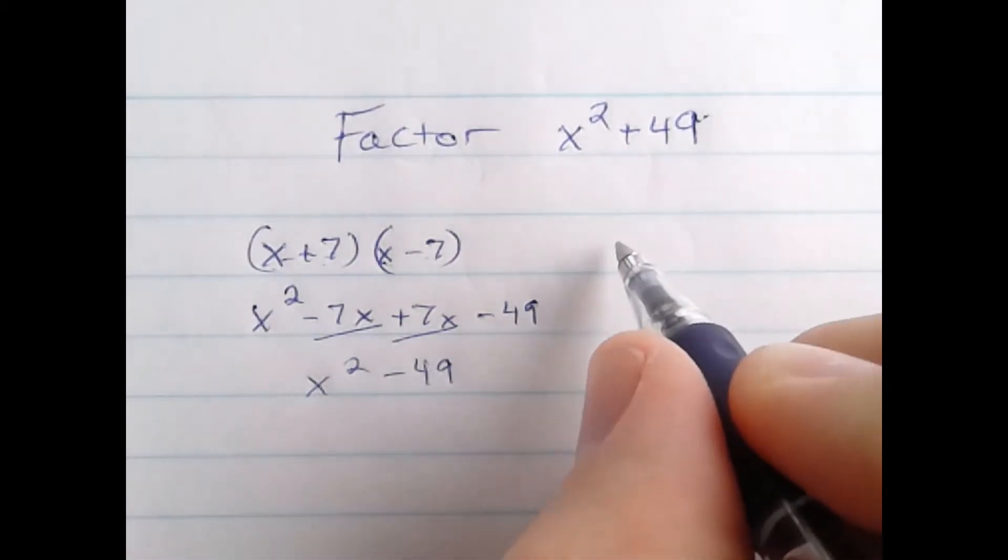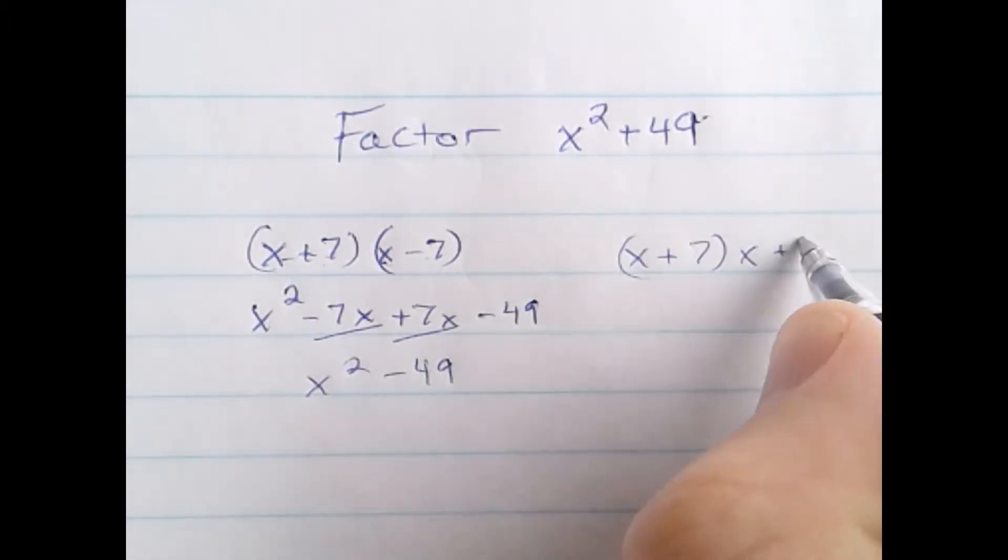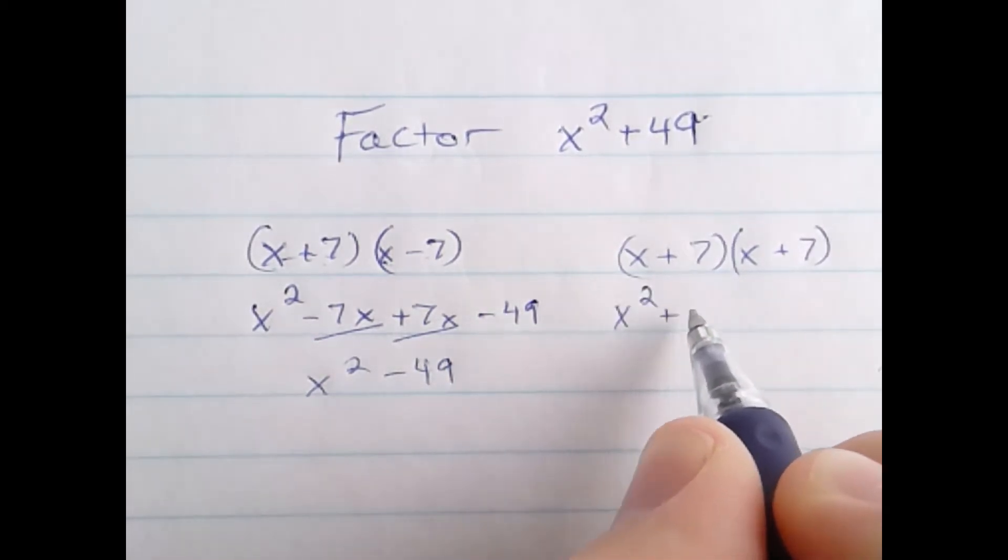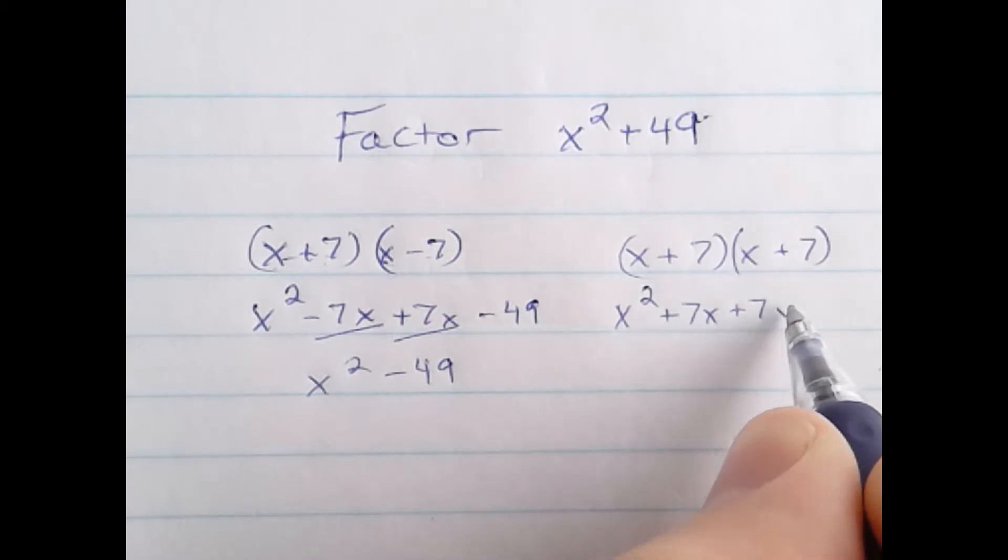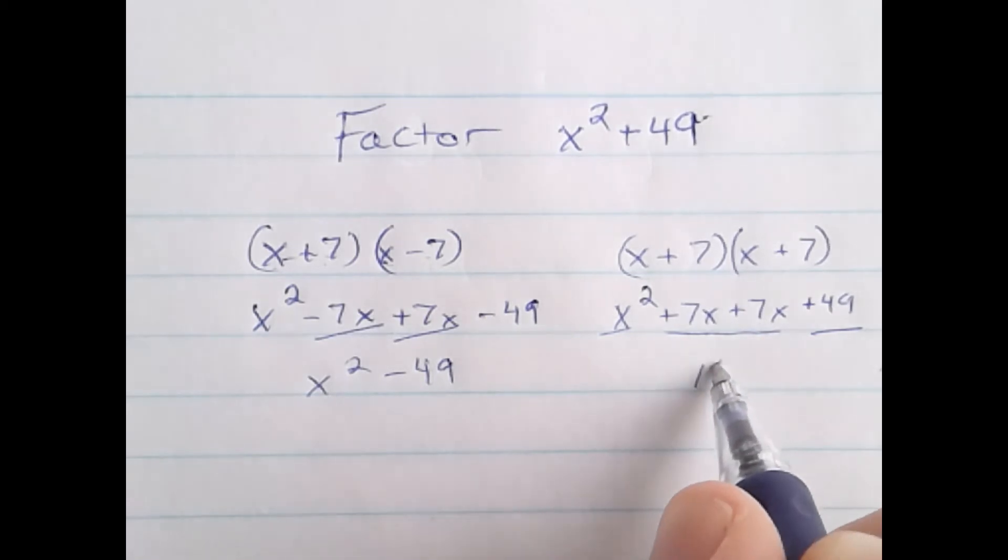If you're wondering if the sum of x plus 7 multiplied by itself, let's see what happens there. x squared plus 7x plus 7x plus 49. Well, we have these two terms that are the same, but notice right here, this combines to make 14x,